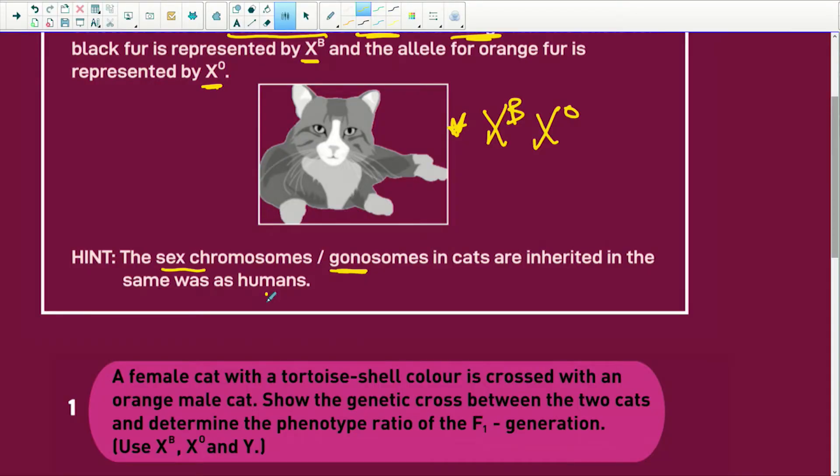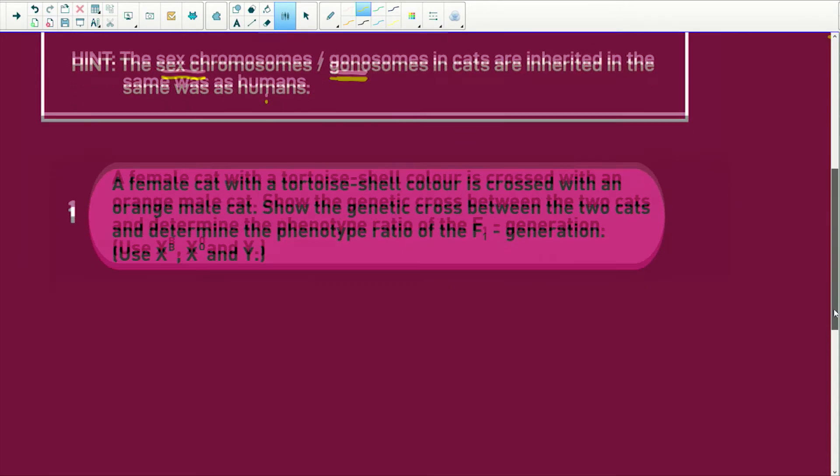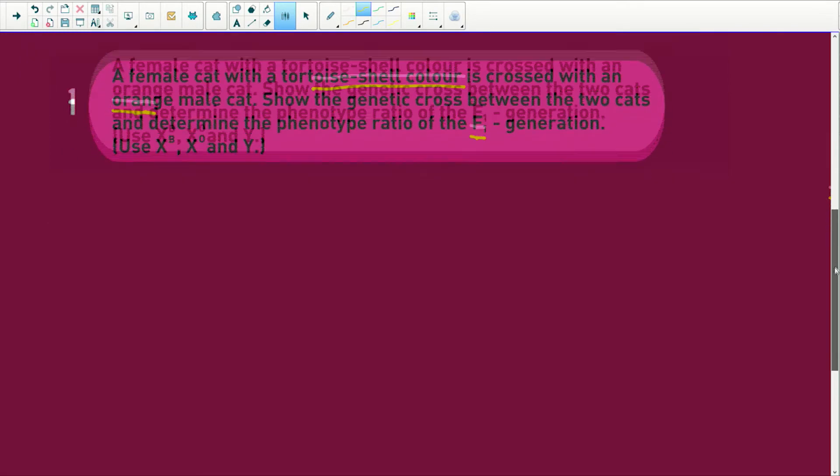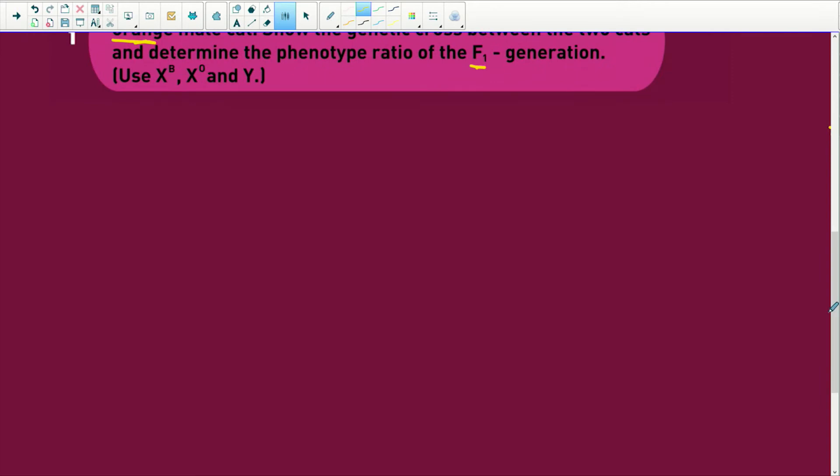Right, let's see here. A female cat with a tortoiseshell colour is crossed, so tortoiseshell colour is crossed with an orange male. Show the genetic cross between the two cats to determine the F1 generation. Easy, easy peasy. Let's see. Right, we're going to do this now. It is going to be so easy, you're going to be absolutely flabbergasted. We've got P1, and we do our phenotype. I'm not going to write this out because we don't have much time. But we've got our tortoiseshell female times our orange male.